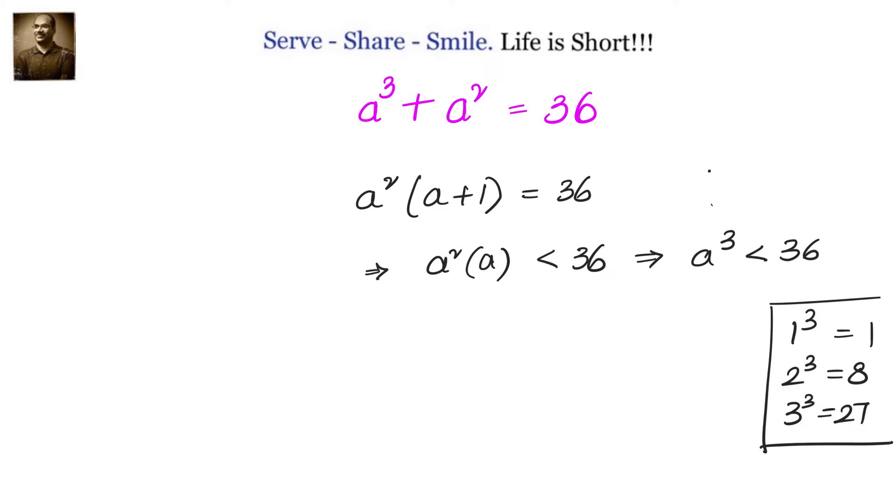Let us substitute the biggest number, that is 3, and see: 3³ + 3² = 27 + 9 = 36. So we know that one of the roots or solutions for A³ + A² = 36 is A = 3.